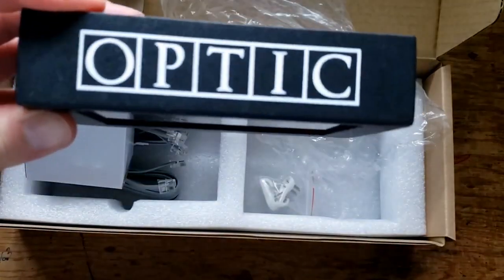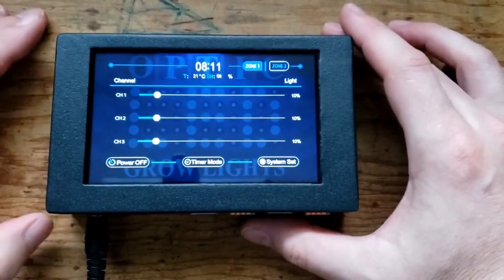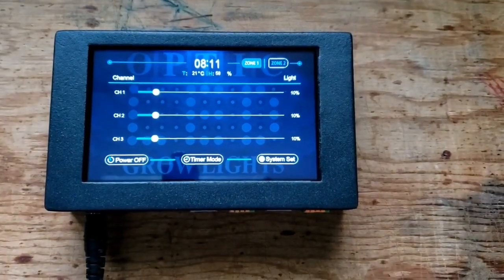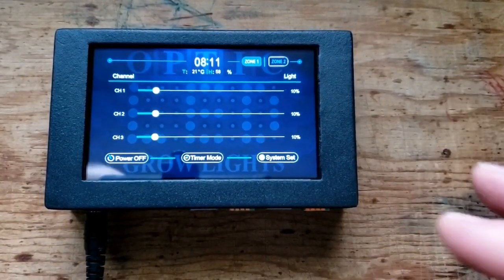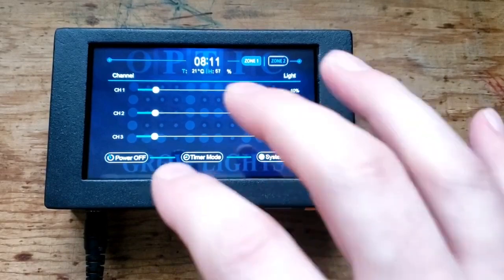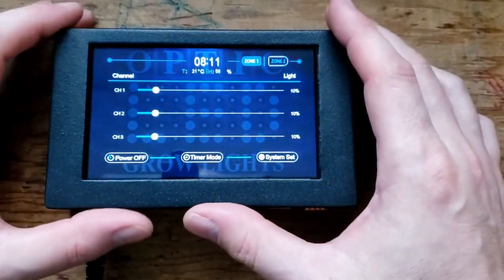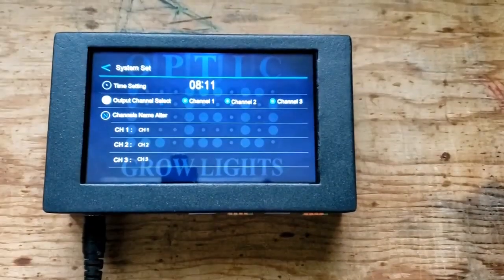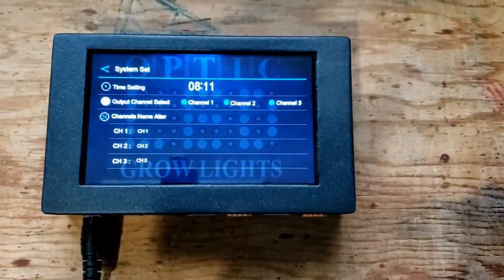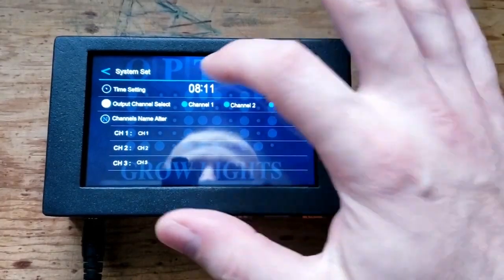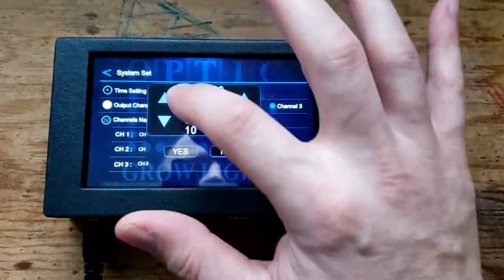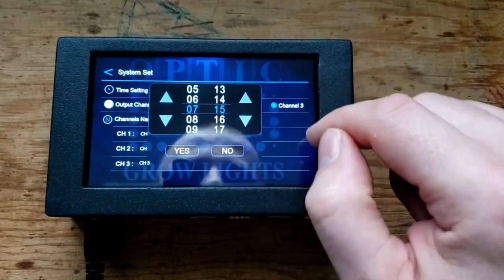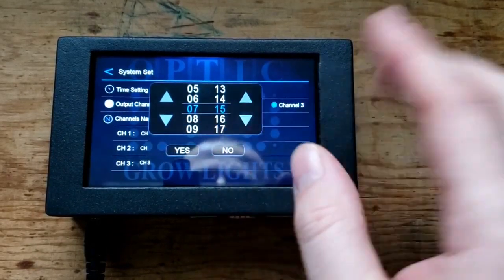Alright guys, so when you plug in your controller this is what you'll see, this will be the main display here. So what you want to do first is go into system set and check your time. It is quarter after seven here, so click the time, click up to seven, seven fifteen.